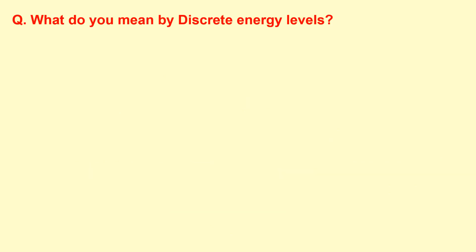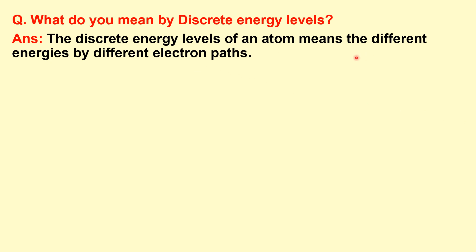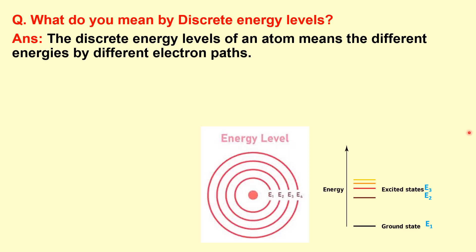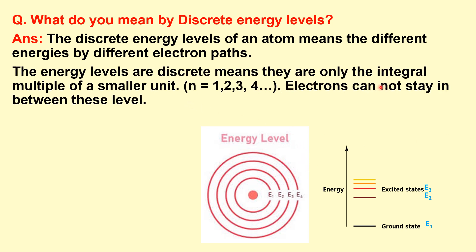What do you mean by discrete energy levels? The discrete energy levels of an atom refer to the different energies corresponding to different electron orbits. The energy levels are discrete, meaning they exist only at integral multiples of smaller units and take only integer values. Electrons can stay only at steps — in E1, E2, E3, or n1, n2, n3 states — and cannot stay in between. These are the discrete energy levels.